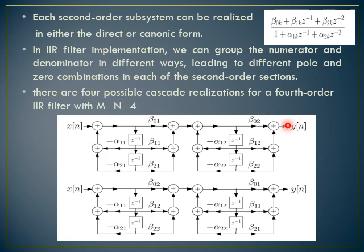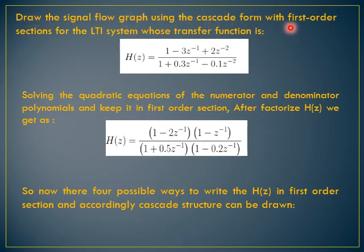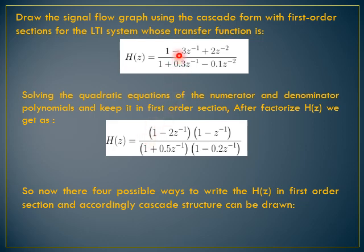Let's see a problem to really understand how it has been drawn. The only thing you need to make sure is that each H1(z) or H2(z) has been cascaded using direct form 2. Example: draw the signal flow graph using cascade form with first order section for an LTI system whose transfer function is H(z) = (1 - 3z⁻¹ + 2z⁻²) / (1 + 0.3z⁻¹ - 0.1z⁻²). After factorizing, we get (1 - 2z⁻¹)(1 - z⁻¹) / (1 + 0.5z⁻¹)(1 - 0.2z⁻¹).